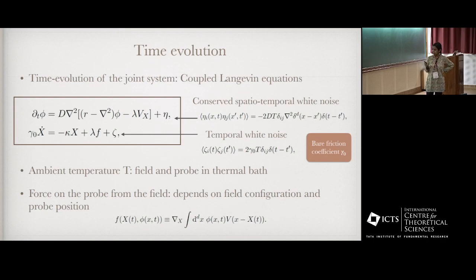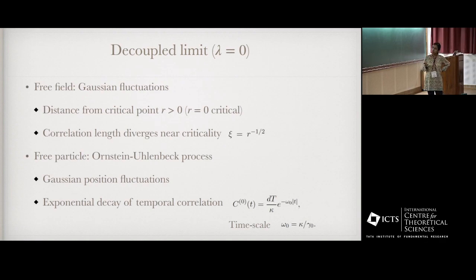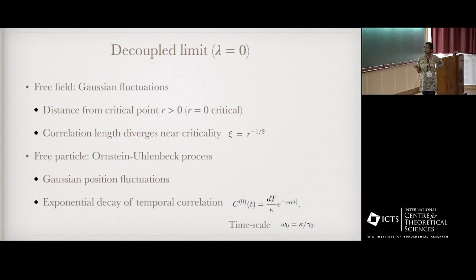Given the Hamiltonian, we can write the time evolution of the joint system as coupled Langevin equations. Because of the coupling there is an extra force on the particle from the coupling potential. In the absence of coupling, the field has free Gaussian fluctuations with a length scale controlled by r, the distance from criticality — this length scale diverges as 1/√r as the critical point r=0 is approached. For the free particle we have an Ornstein-Uhlenbeck process: position fluctuations are Gaussian and the two-point correlation of position decays exponentially with a time scale proportional to the stiffness of the trap.